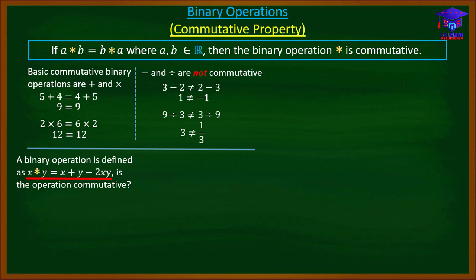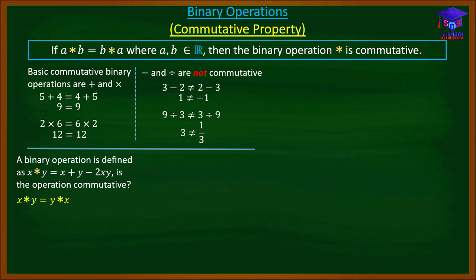Let's look at another example. A binary operation is defined as x★y = x + y − 2xy. Is the operation commutative? To determine this, we check whether x★y equals y★x. We already have x★y, so let's compute y★x — wherever we find x in the definition we put y, and wherever we find y we put x.